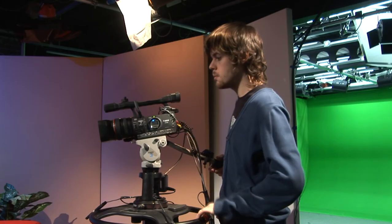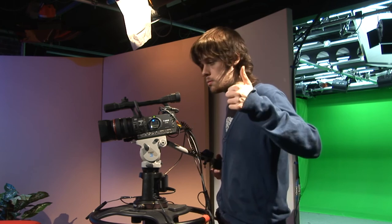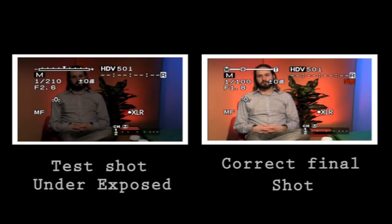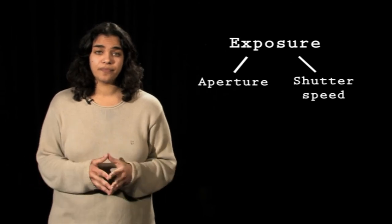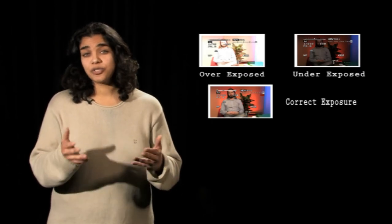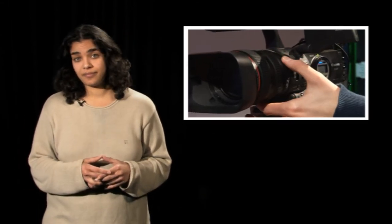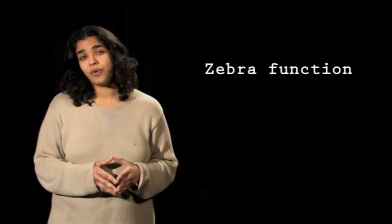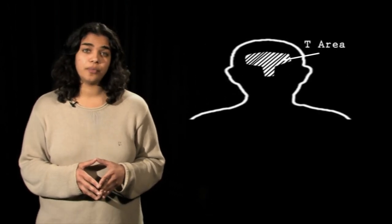We now have the correct exposure for our scene. Just to show you the difference it's made, let's compare our final shot to our test shot. So remember: exposure depends on the aperture and shutter speed setting of your camera. Exposure affects how light or dark your shot is. If the exposure is filmed wrong, it cannot always be fixed when editing. Exposure can be adjusted by turning the iris ring on your camera. Zebra function is a more effective way of finding the correct exposure. Correct exposure is usually when the Zebra lines are on the T area of a person's face.